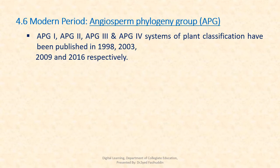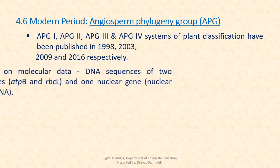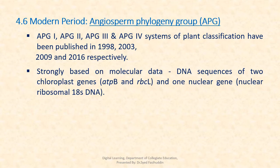The Angiosperm Phylogenetic Group classification is the modern and most recent system. APG I, II, III and IV have been published so far. These classifications are strongly based on molecular data like DNA sequences of two chloroplast genes and one nuclear gene.